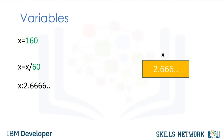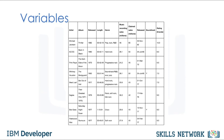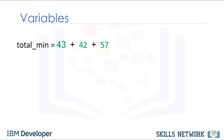As before, the old value of x is not important. We can use the type command on variables as well. It's good practice to use meaningful variable names so you don't have to keep track of what the variable is doing. Let's say we would like to convert the number of minutes in the highlighted examples to number of hours in the following music data set.